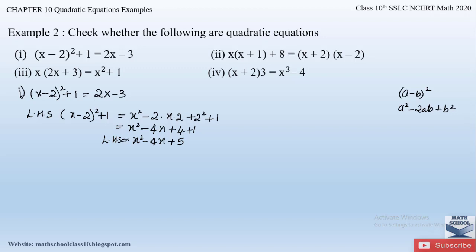Now we equate the left-hand side with the right-hand side: x² − 4x + 5 = 2x − 3. Sending the right-hand side terms to the left-hand side, we get x² − 4x + 5 − 2x + 3 = 0.